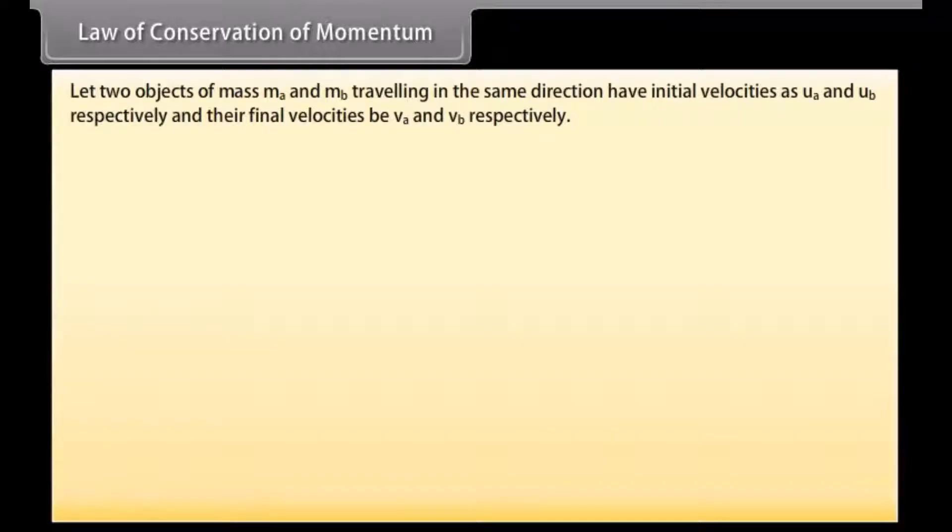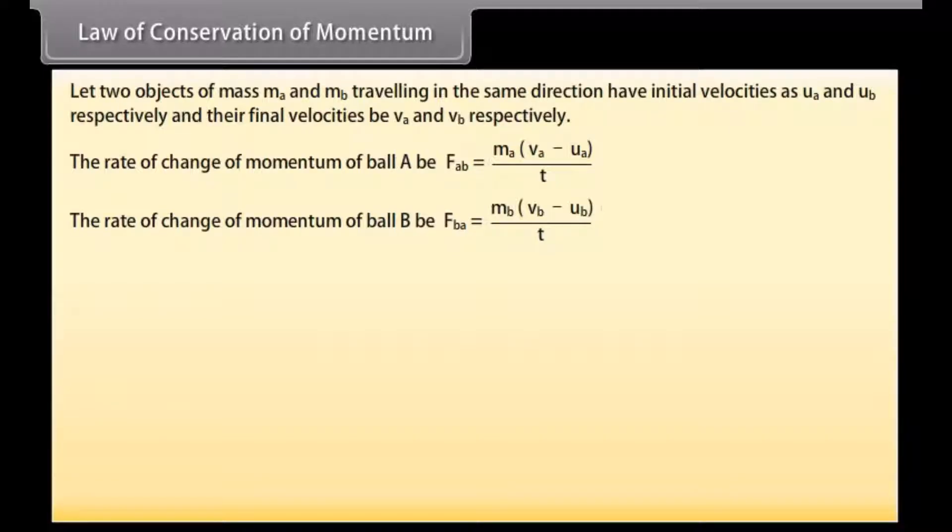Let two objects of mass M-A and M-B traveling in the same direction have initial velocities as U-A and U-B respectively and their final velocity is V-A and V-B respectively. The rate of change of momentum of ball A by F-A-B which is equal to M-A into V-A minus U-A upon T. The rate of change of momentum of ball B by F-B-A is equal to M-B into V-B minus U-B upon T.